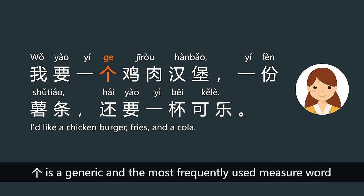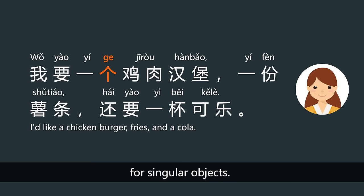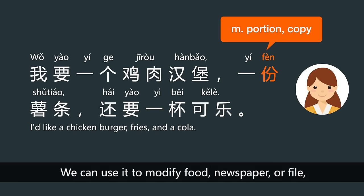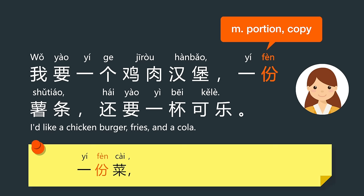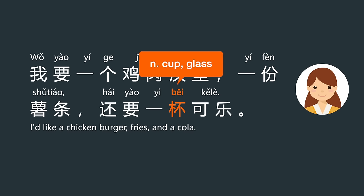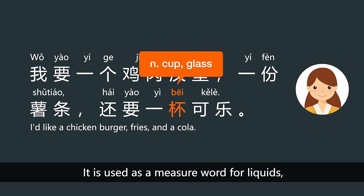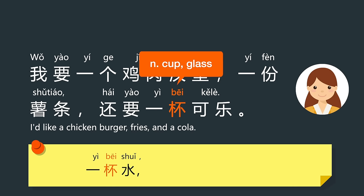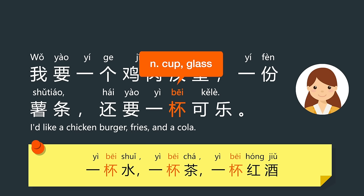个 is a generic and the most frequently used measure word for singular objects. 份 is used for portions or servings, such as a serving of fries. 杯 means cup or glass, and is used as a measure word for liquids. Such as 一杯水 (a glass of water), 一杯茶 (a cup of tea), 一杯红酒 (a glass of red wine).